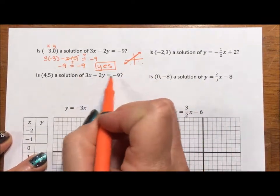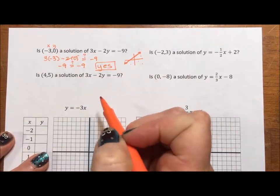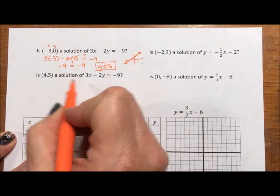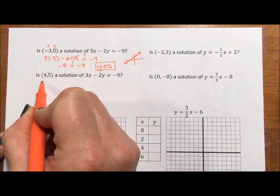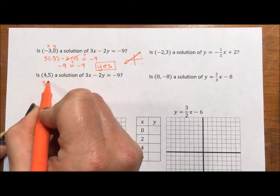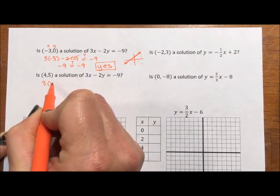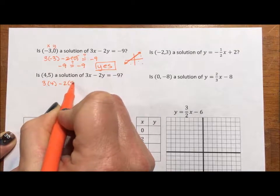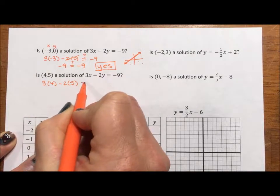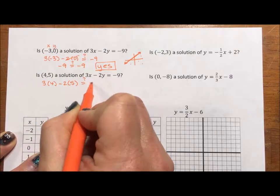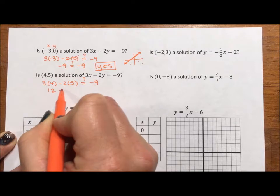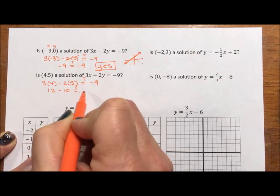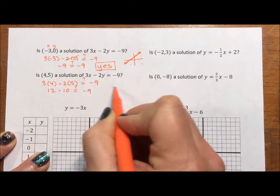Okay, here's the same line. Let's test another point and see what happens. If I put in 4 for x and 2 for y, does this equal negative 9? Let's see: 12 minus 10? No.